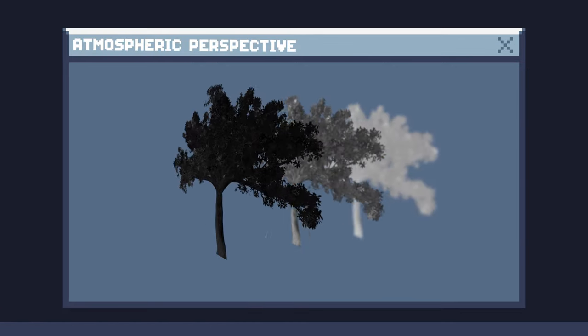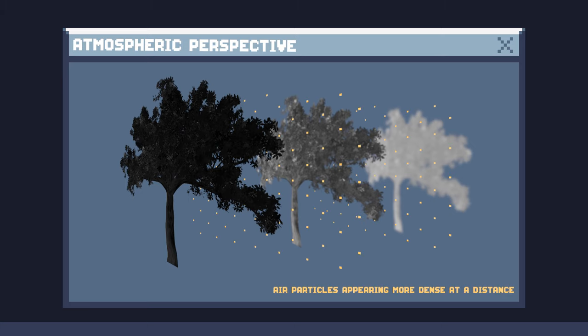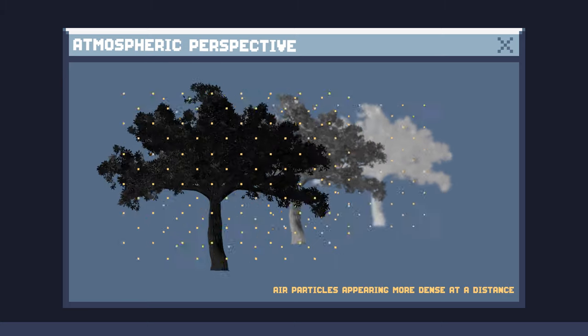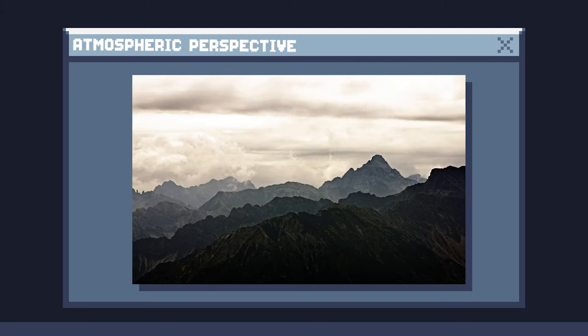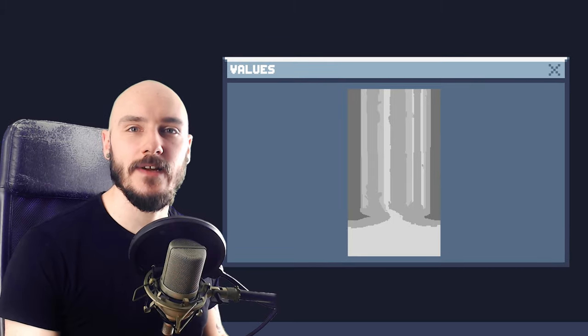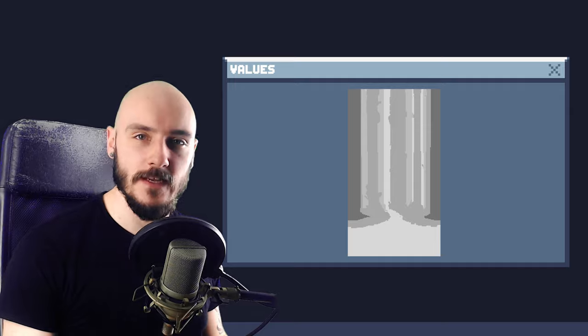As the trees recede into the background we lose some clarity and they get lighter in value because of the atmosphere in between. This is called atmospheric or aerial perspective and can be seen in natural landscapes. I exaggerated here to really sell the depth of the image.